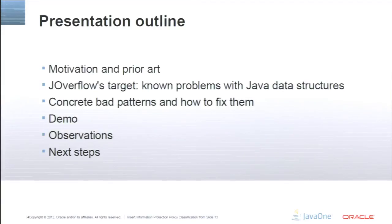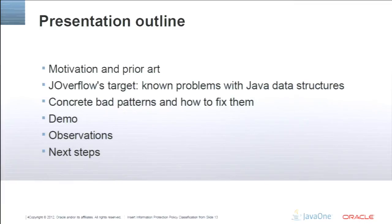The outline of this presentation is as follows. We are going to talk about why we started this work and what other tools exist and what they do. Then we'll discuss the main thing about this tool: the problems with Java memory structures that it looks for. We are going to demonstrate the tool and present observations about real-life Java heaps inspected with it. Finally, if time permits, we'll talk about what we plan to do next.